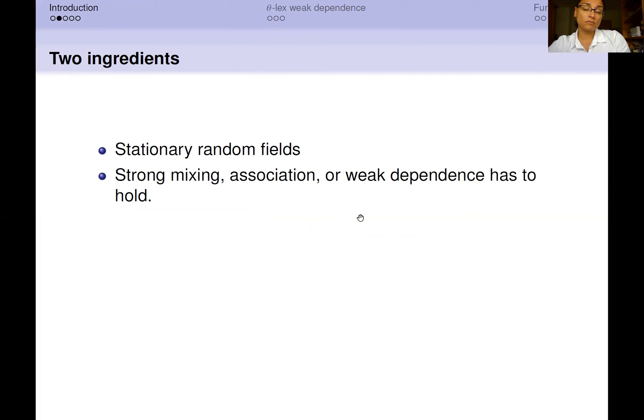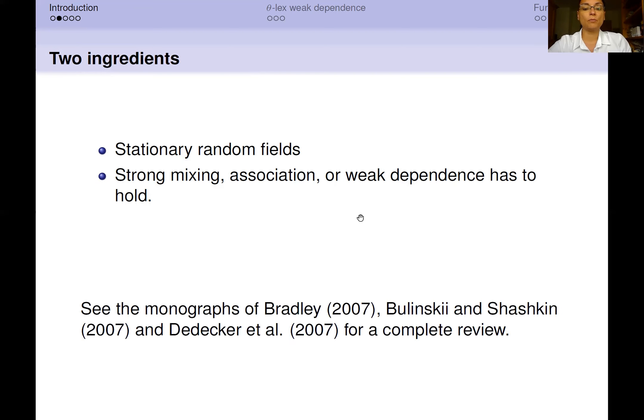They rely basically on two ingredients. The first one is assuming that the fields we analyze is stationary and the second relies in assuming that the field satisfies an asymptotic dependence notion, as for example, strong mixing, association, or weak dependence. I refer to the monographs of Bradley, Burmishki, Shashkin, and Dela Geredo for a complete review on this kind of independence notion.